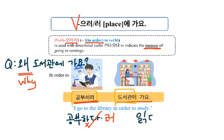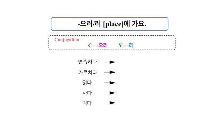읽다 — there is 받침 before 다. In this case, take out 다 and add 으러. 책을 읽으러. 저는 책을 읽으러 도서관에 가요.